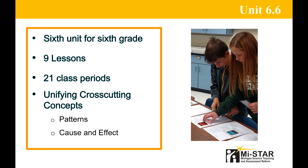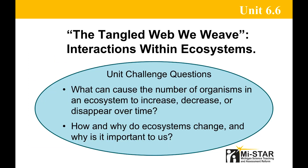This unit is designed for 6th grade and is the 6th unit for the school year. Unit 6.6 is comprised of 9 lessons, including the lesson opener and unit closer, requiring a minimum of 21 50-minute class periods. The semester unifying cross-cutting concepts are Patterns and Cause and Effect. The full title of Unit 6.6 is The Tangled Web We Weave: Interactions Within Ecosystems.